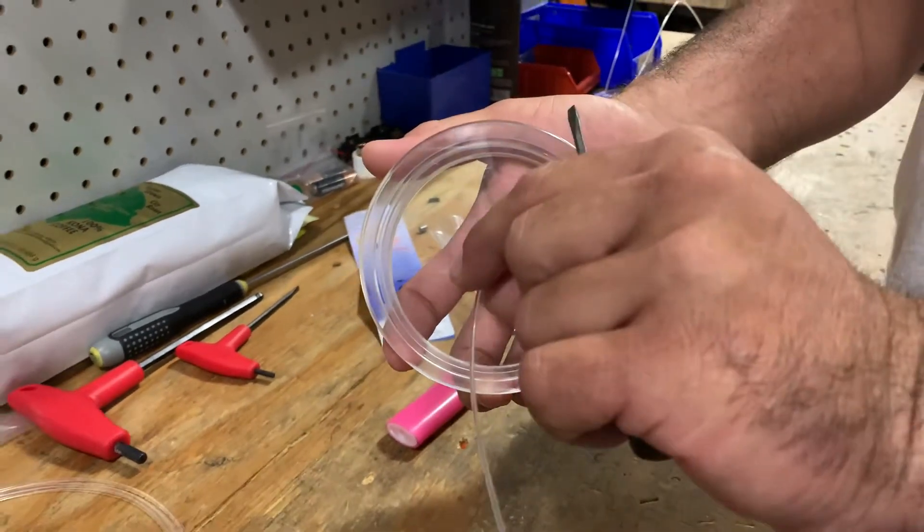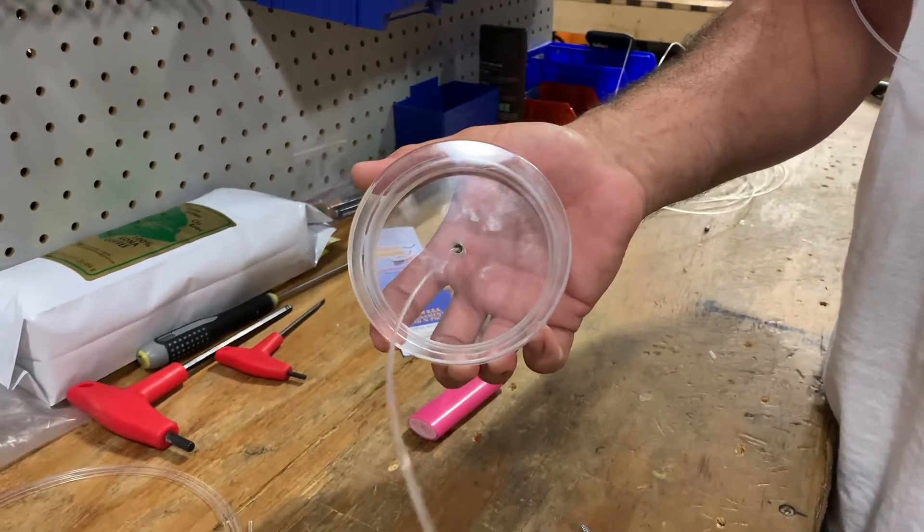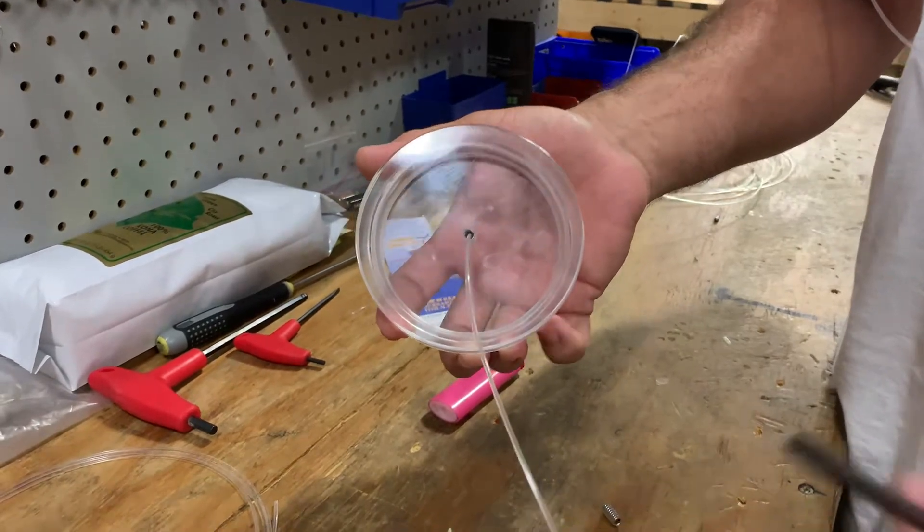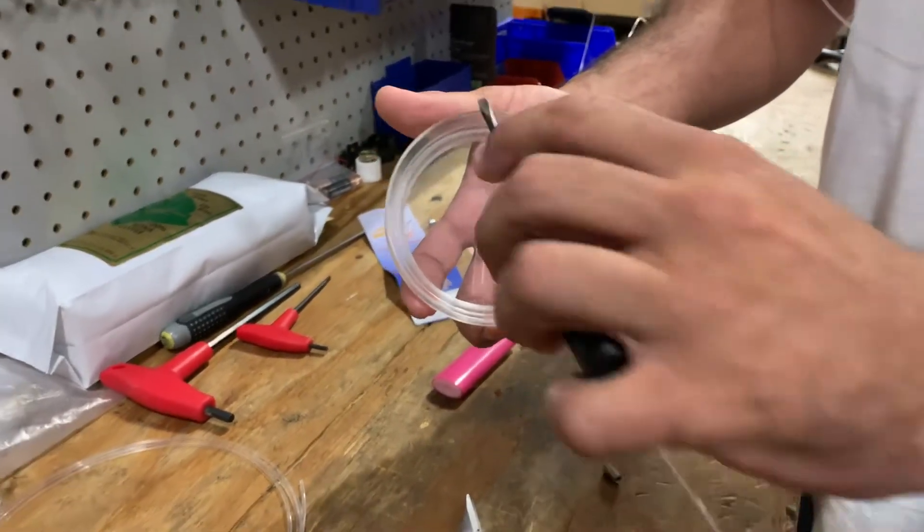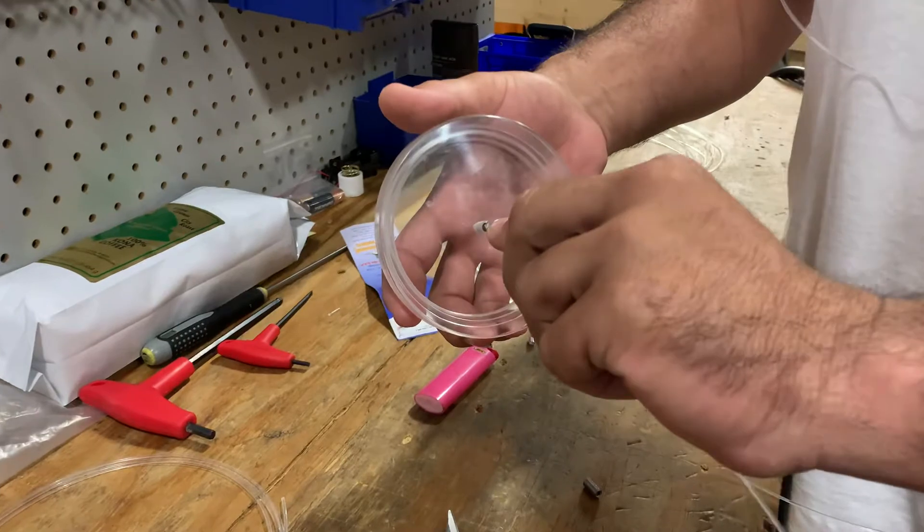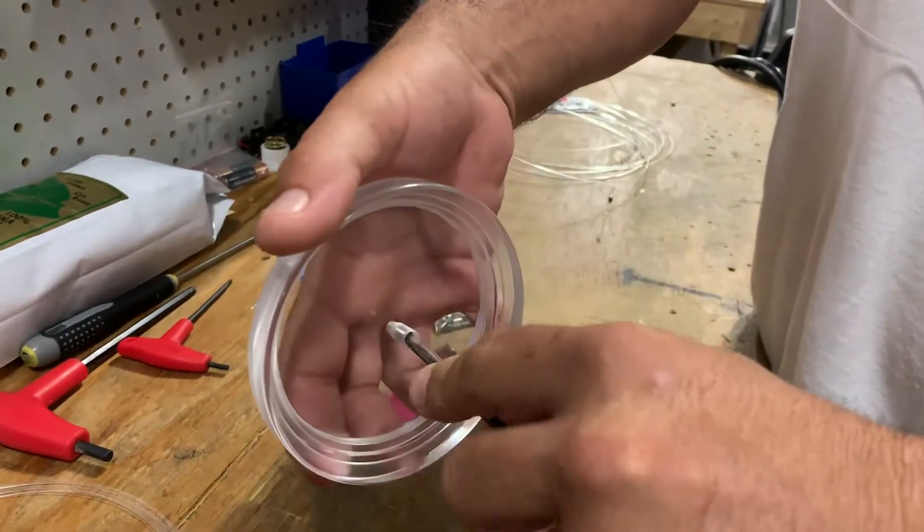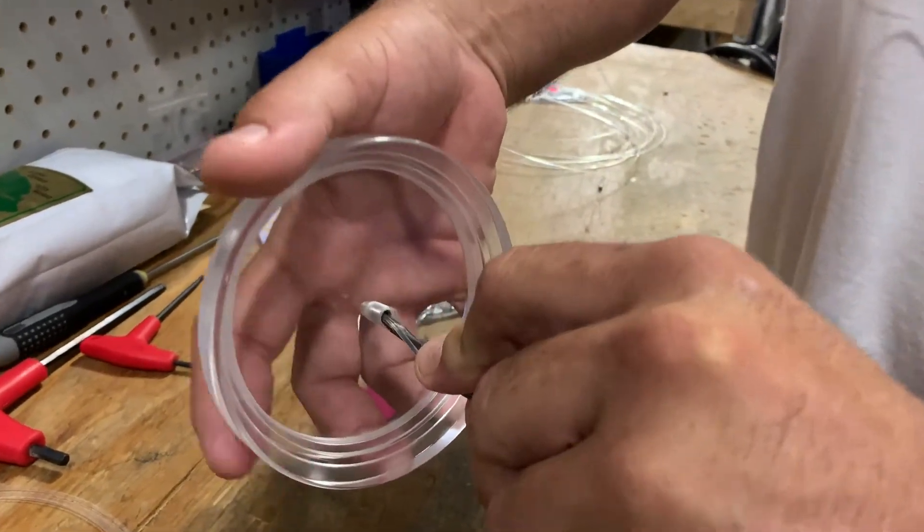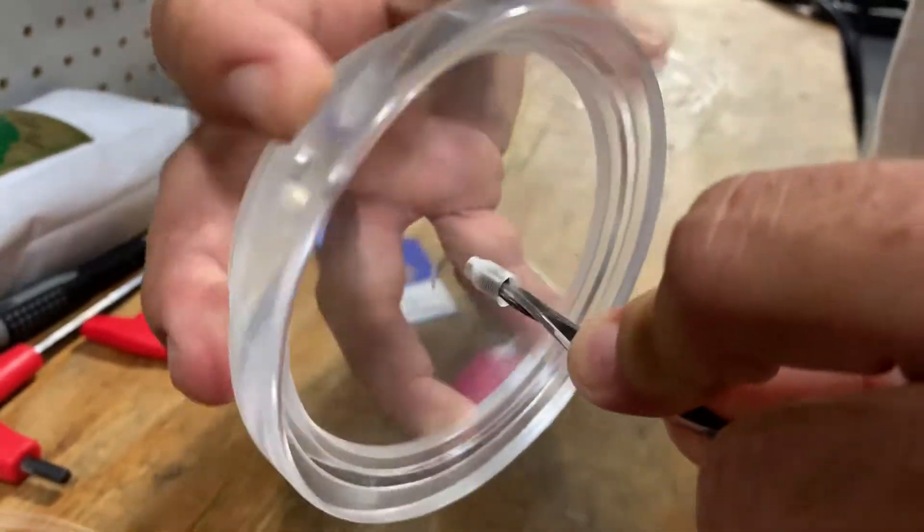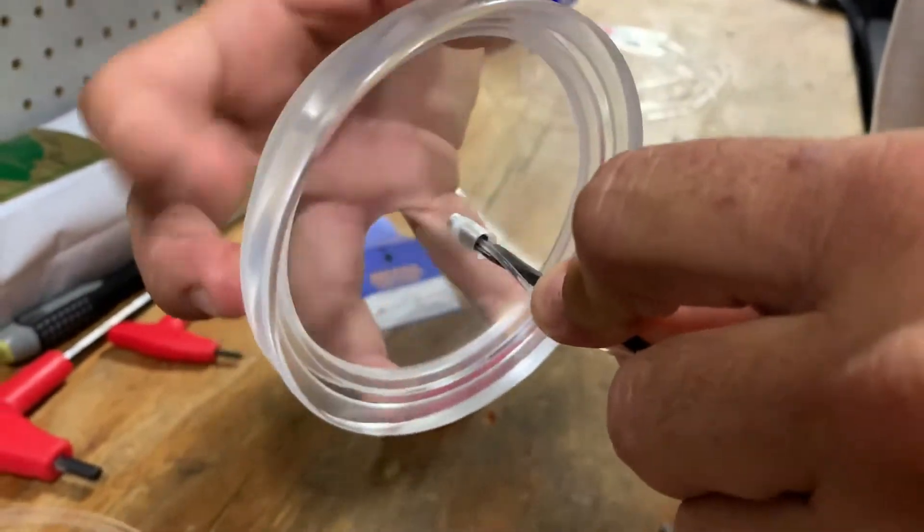How to replace the monofilament leader out of your deep water camera housing. You want to take a small flathead screwdriver, stick it right in the hole. Lay the line right up against the flathead, and then you're just gonna unscrew.